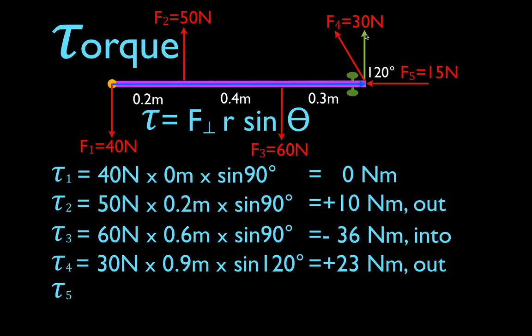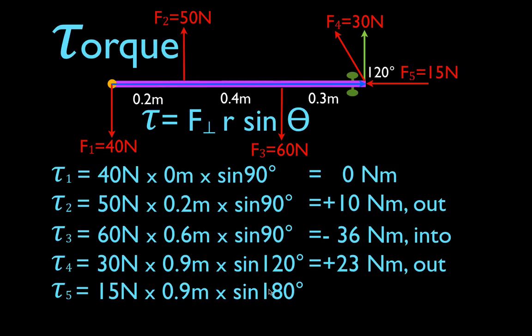Force number five pushes right along the door, parallel to the radial vector, pointing directly at the axis of rotation. We use the same process: multiply the force times the lever arm times the sine of the angle between the radial vector and the force vector. These two vectors are parallel, pointing in opposite directions, so the angle is 180 degrees. The sine of 180 is zero, and therefore force number five — 15 newtons — produces a torque of zero. It makes intuitive sense: if you push along a door, that force would not cause the object to rotate.